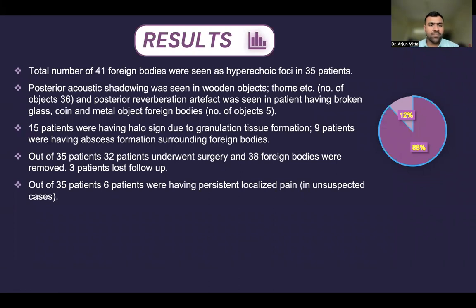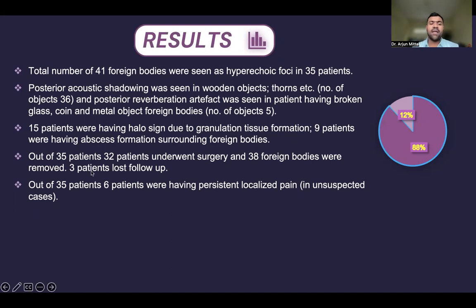Coming to the results: a total of 41 foreign bodies were seen as hyperechoic foci in 35 patients. Posterior acoustic shadow was seen in wooden objects and thorns; out of 41, 36 foreign bodies showed posterior acoustic shadow. Posterior reverberation artifact was seen in patients having broken glass, coin, and metal object foreign bodies. 15 patients were having halo sign due to granulation tissue formation, and 9 were having abscess formation surrounding the foreign bodies. Out of 35 patients, 32 patients underwent surgery and 38 foreign bodies were removed; 3 patients were lost to follow-up. 6 patients were having persistent localized pain and were considered as unexpected cases.